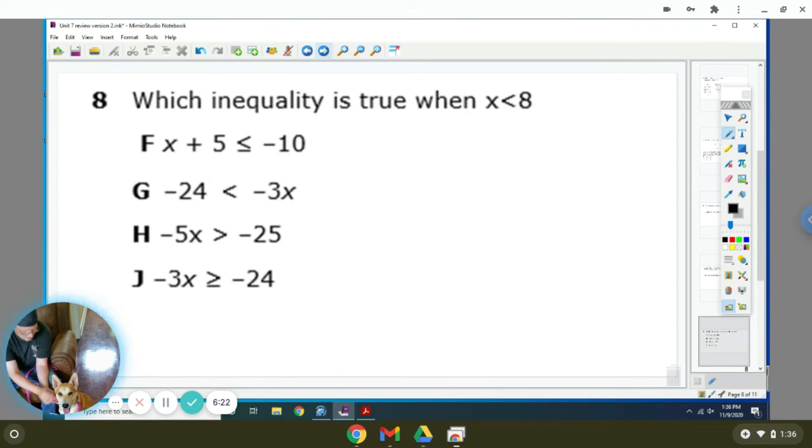Which inequality is true when X is less than 8? So we're just going to solve these when X is less than 8. You're going to subtract five from here. Subtract five from here. So you get X is less than or equal to negative 15. So anything less than negative 15 is the solution. That's not true for that. So that's wrong.